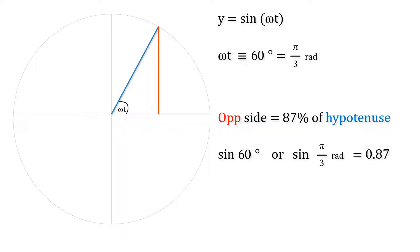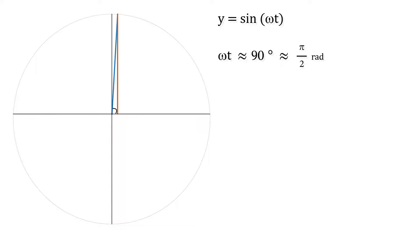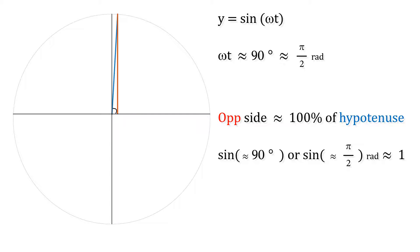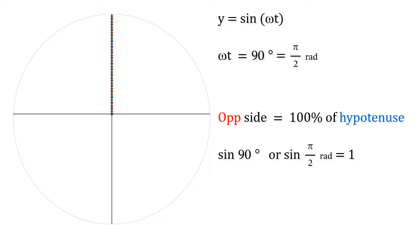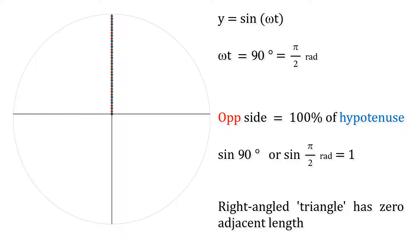The sine of 60 degrees or pi over 3 radians is 0.87. As the angle in the right-angle triangle approaches 90 degrees or pi over 2 radians, the sine function approaches 1, which means the opposite side length is nearly as big as the hypotenuse length. And when omega t does equal 90 degrees or pi over 2 radians, the opposite side and the hypotenuse are the same length, meaning the right-angle triangle has no width and collapses in on itself temporarily.